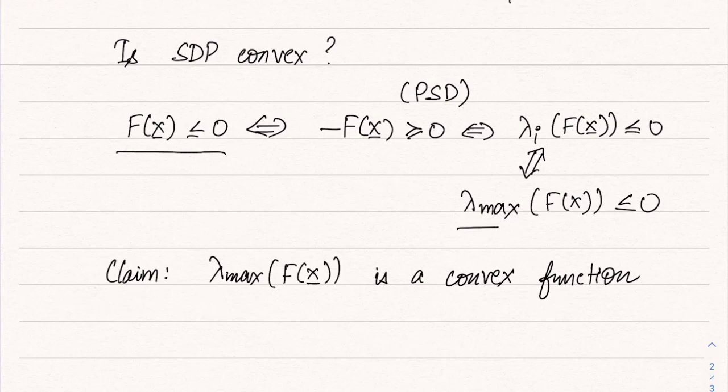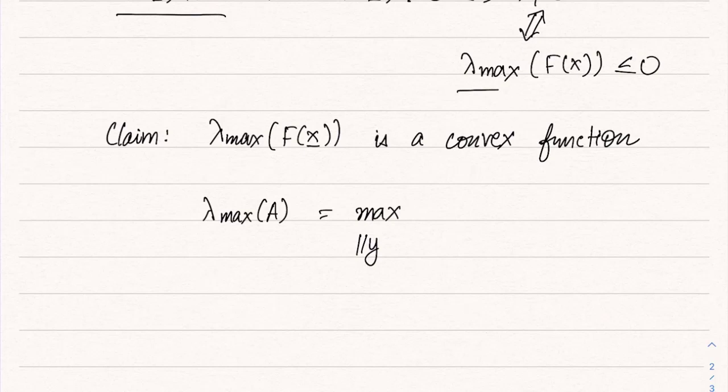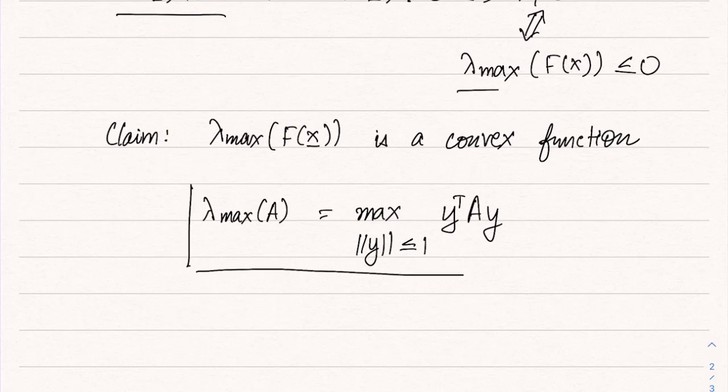Note that if lambda_max of f(x) is convex, then the constraint f(x) negative semi-definite is equivalent to the constraint lambda_max of f(x) less than or equal to zero, which is a convex function less than or equal to zero — the standard convex form. It remains to prove that lambda_max of f(x) is actually a convex function of x. For this purpose, we use the definition: lambda_max of a symmetric matrix A equals the maximum of y transpose A y over all y with norm less than or equal to 1.